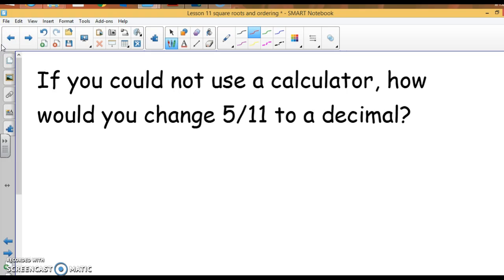If you could not use a calculator, how would you change 5/11 to a decimal? Well, if you couldn't use a calculator, you would divide 5 by 11. Put a decimal point, add a bunch of zeros. 11 goes into 50, 4 times, that's 44. I subtract, I get 6, bring down a 0. 11 goes into 60, 5 times.